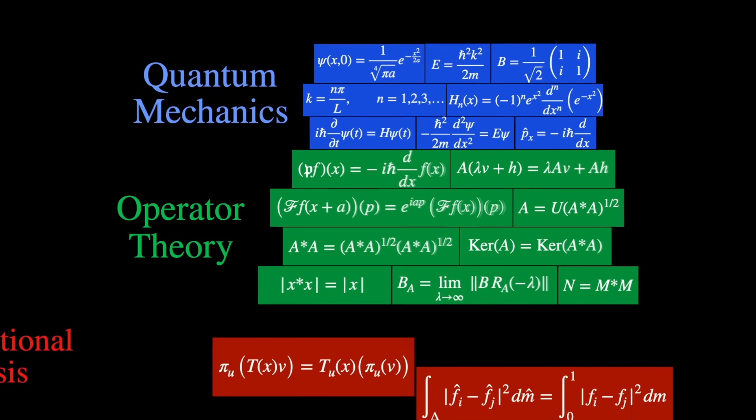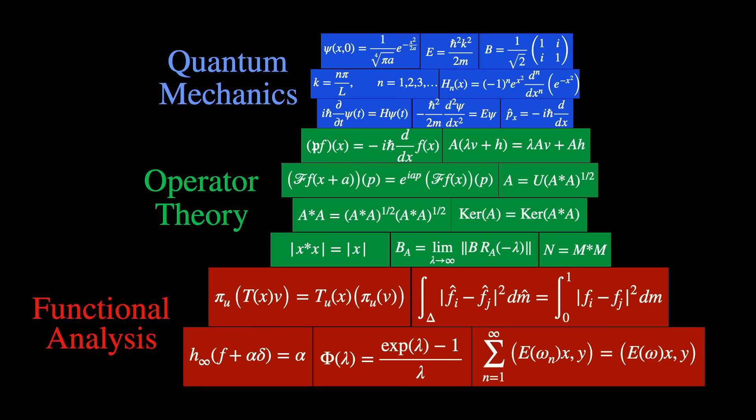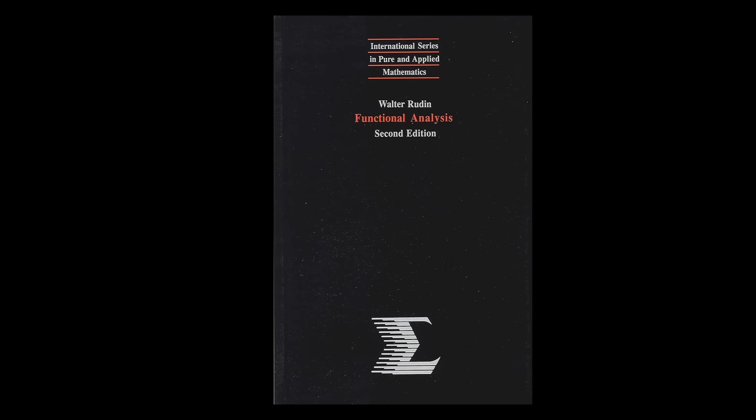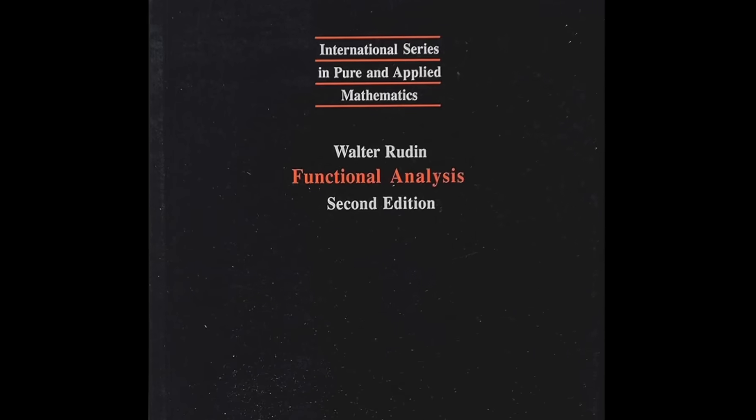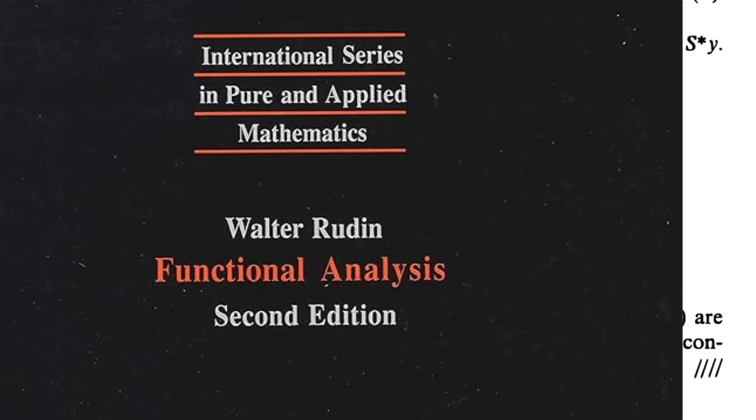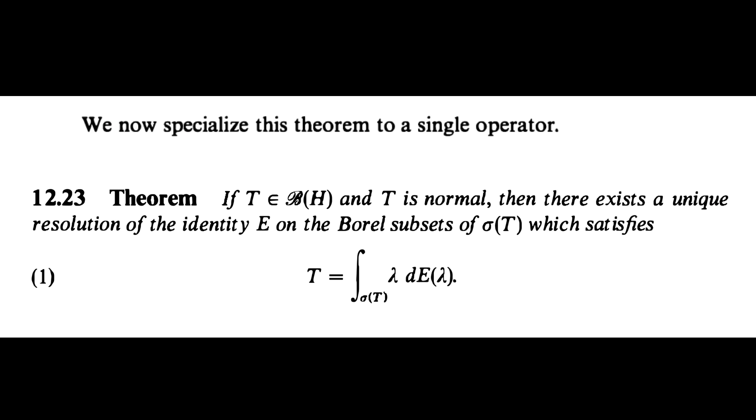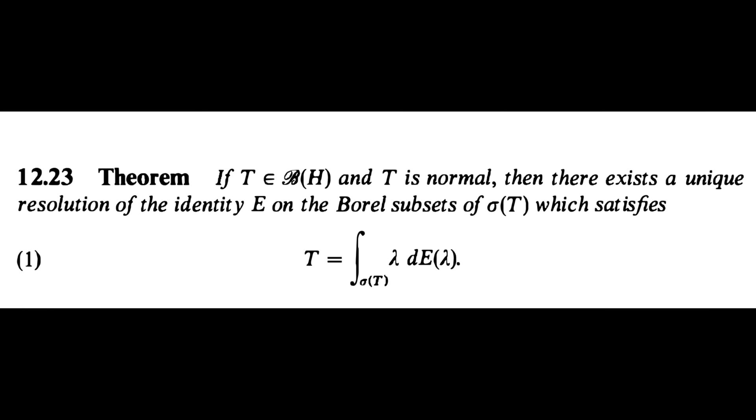Operator theory is a branch of functional analysis. One of the most famous books on functional analysis out there is Functional Analysis by Walter Rudin. Let's go to page 308, where we find a particular case of the spectral theorem for a single bounded normal operator. Try to read it and see if you can understand it.